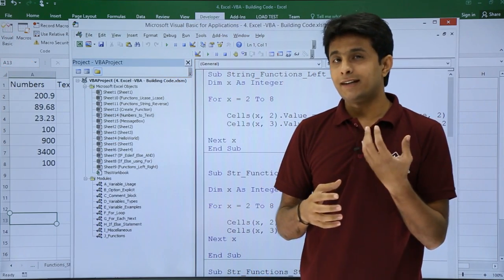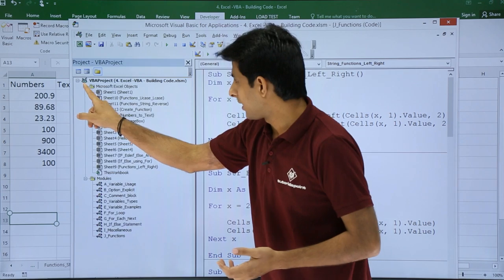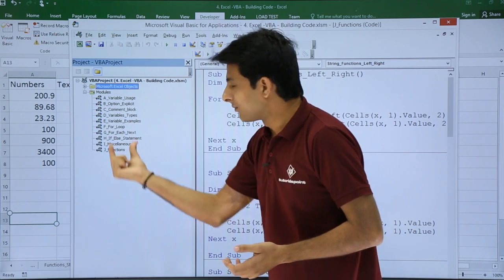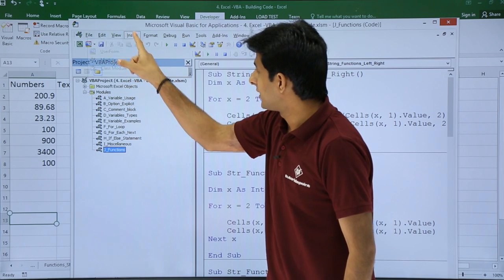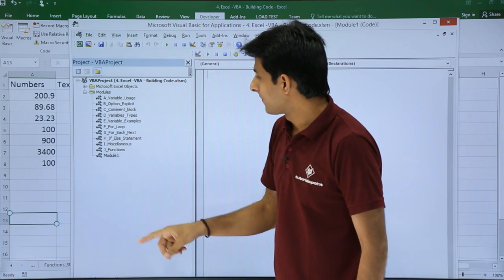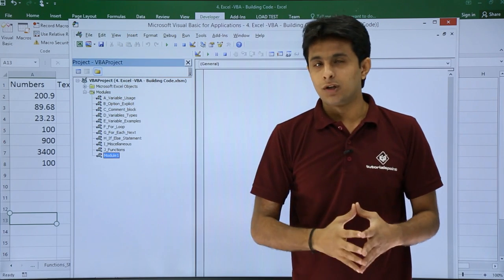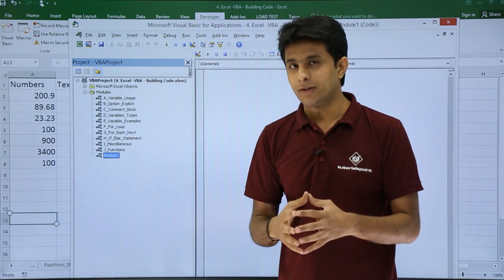Now I'll create a module here. I'll minimize this. These are the different modules here. How do you create a module? I'll just go to Insert and click on Module.